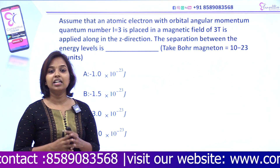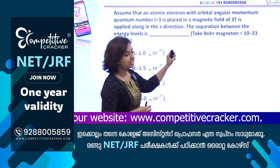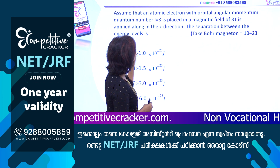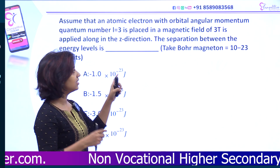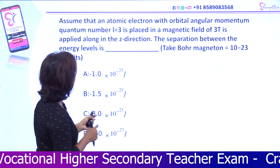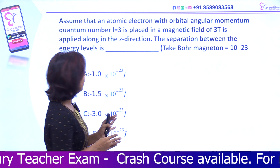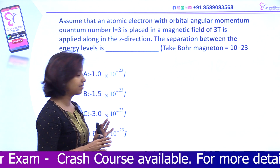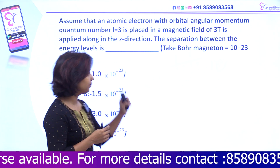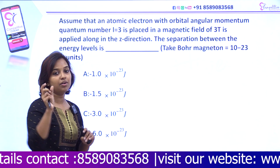I will include the first question. Assume that an atomic electron with orbital angular momentum l equal to 3, placed in a magnetic field of 3 tesla applied along the z direction. The separation between the energy levels is — take the Bohr magneton equal to 10 to the power minus 23. We are going to discuss the range.